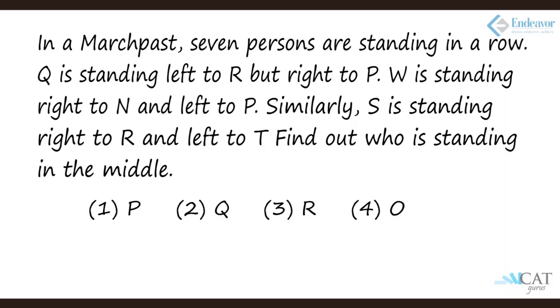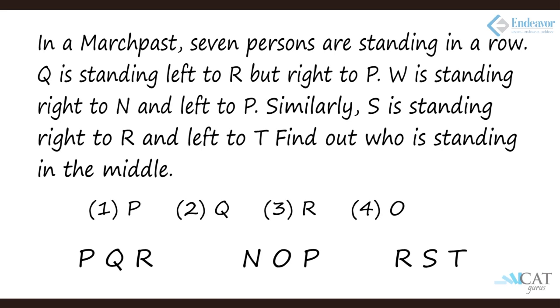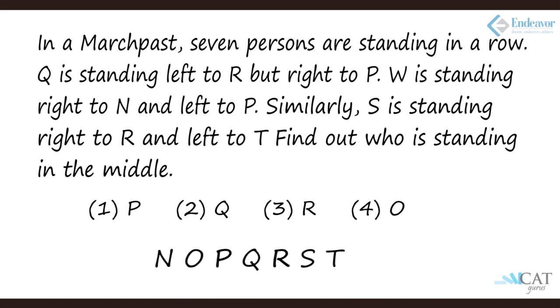Let's take another example. In a march past, seven persons are standing in a row. Q is standing left to R but right to P — a three-person unit P, Q, R. W is standing right to N and left to P — another unit N, W, P. S is standing right to R and left to T — another unit R, S, T. So we have three units of three people each. Putting them together: N, O, P, Q, R, S, T — perfectly in order.